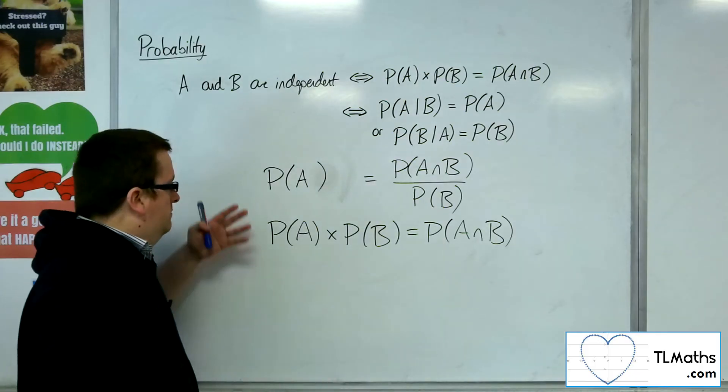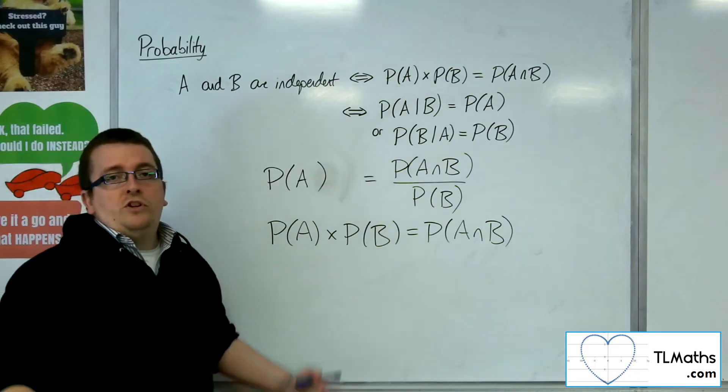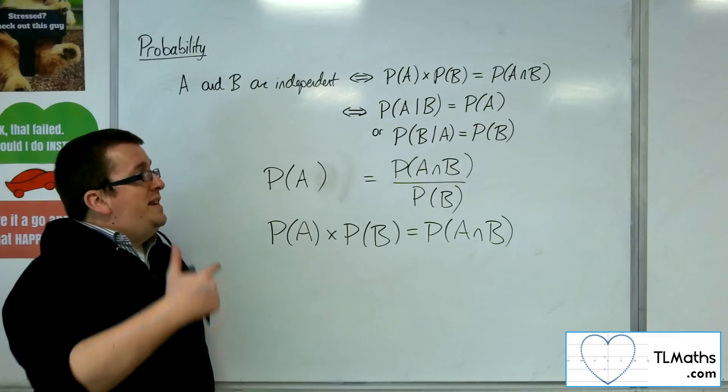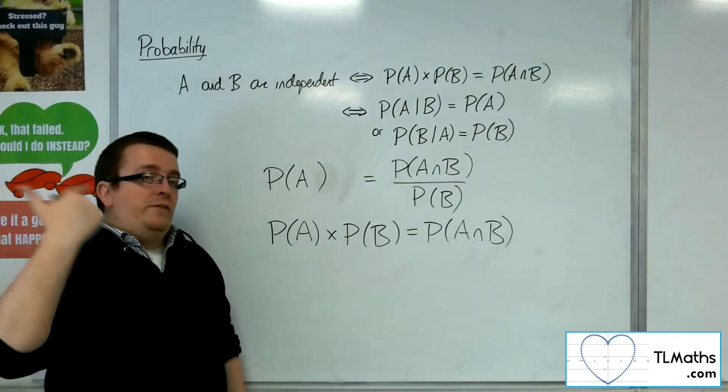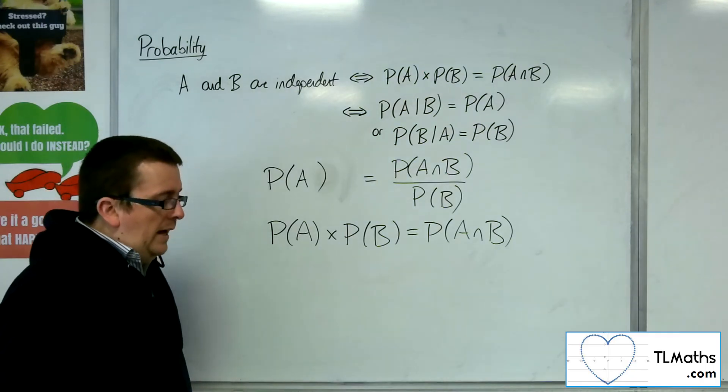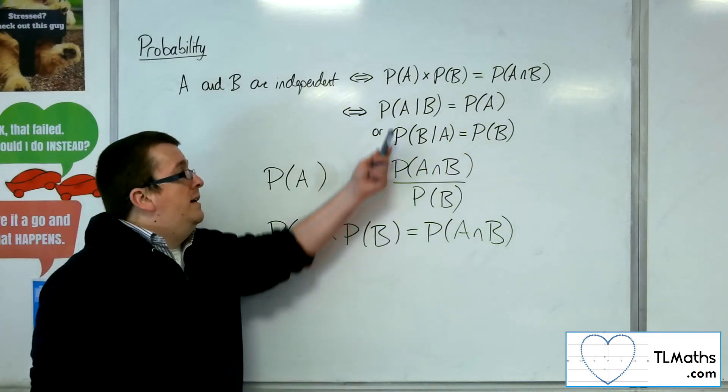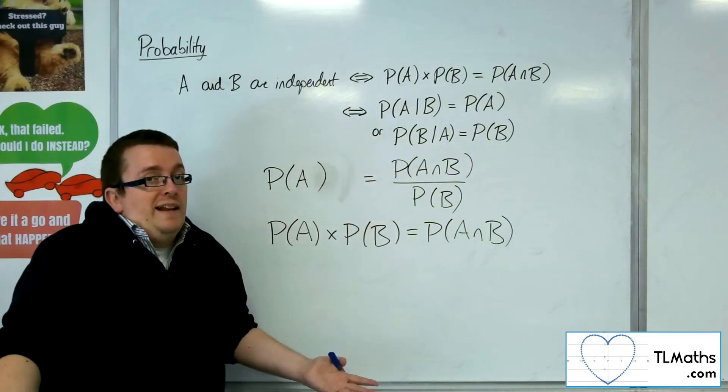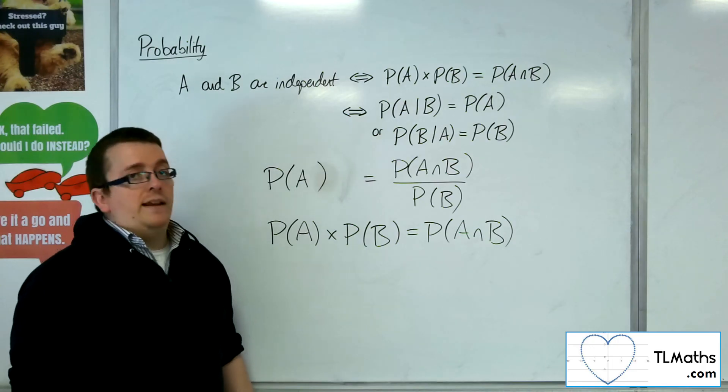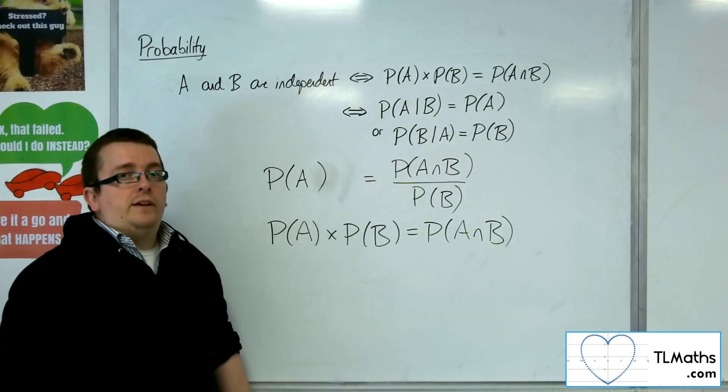So if A and B are independent, you get this, which is the same thing as before. So we now have these two ways. So if you were given the probability of A and the probability of A given B, and they're two different values, then clearly the two events can't be independent.